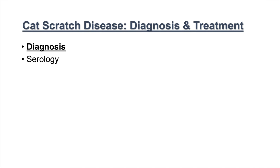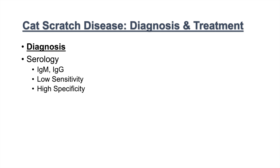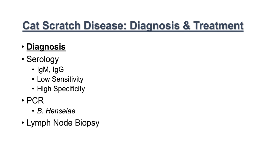Diagnosis involves serology — looking at IgM and IgG levels. IgM and IgG serology has low sensitivity but high specificity, so if we see IgM or IgG antibodies to Bartonella henselae, we can confirm a diagnosis of Bartonellosis or cat scratch disease. PCR can also be performed to look at DNA involving B. henselae. Lymph node biopsy can be performed as well, though it's generally not required if we have good history, serology, and a possible PCR.